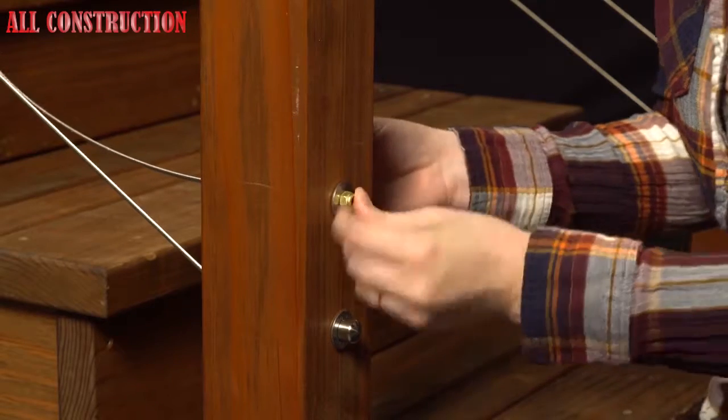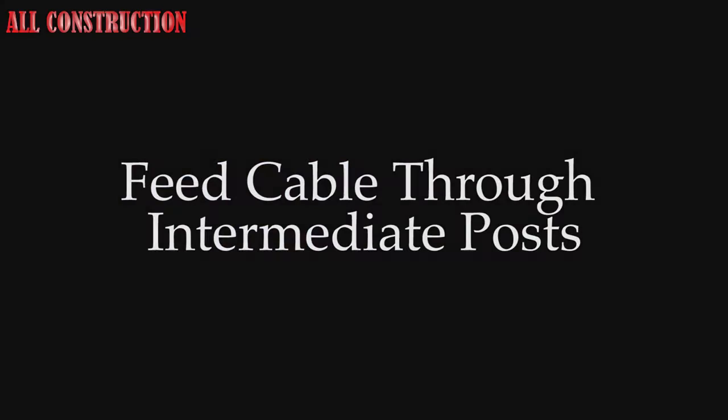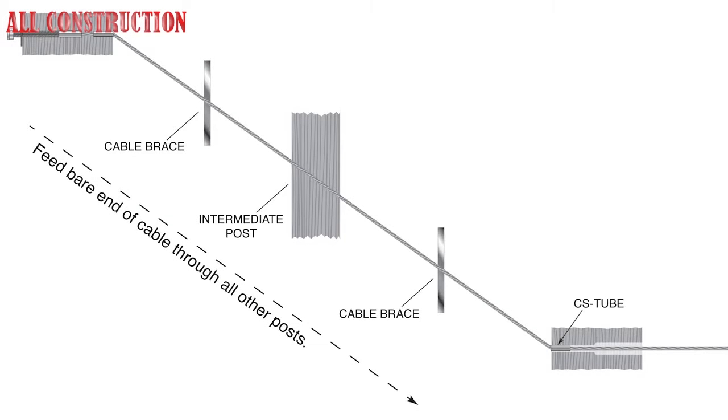Feed the cable through the end post, pulling the threaded stud into place. Feed cable through intermediate posts. Pass bare end of cable through intermediate posts and through other end post which includes post protector tube if wood post.